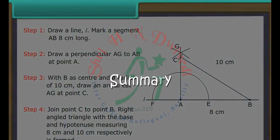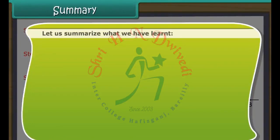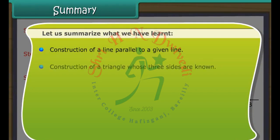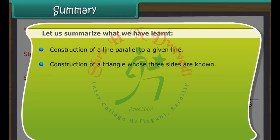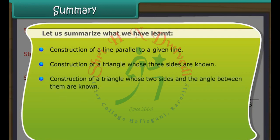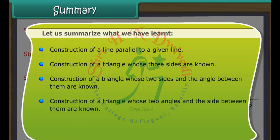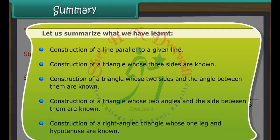Summary. Let us summarize what we have learned: construction of a line parallel to a given line; construction of a triangle whose three sides are known; construction of a triangle whose two sides and the angle between them are known; construction of a triangle whose two angles and the side between them are known; and construction of a right angled triangle whose one leg and hypotenuse are known.